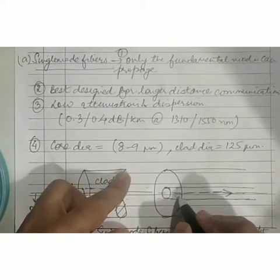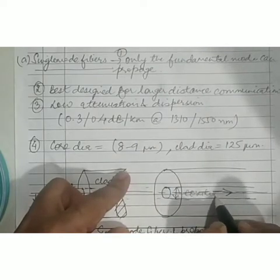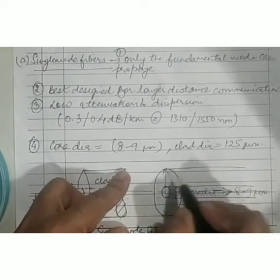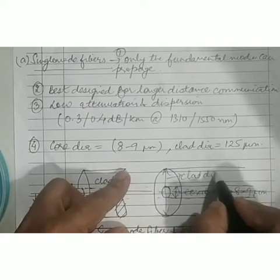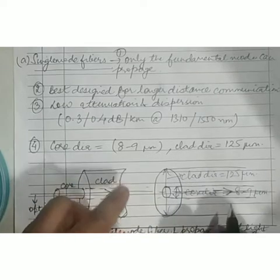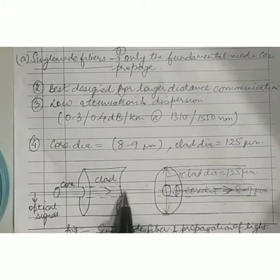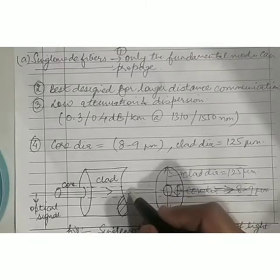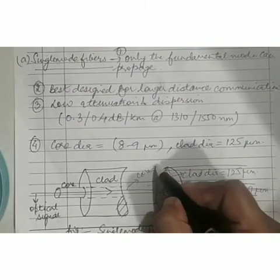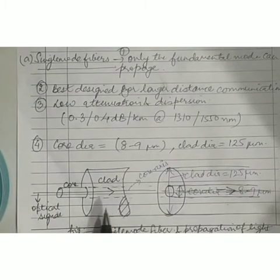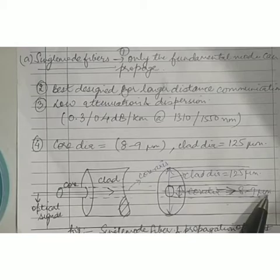The core diameter is around 8 to 9 micrometers, whereas the cladding diameter can be up to 125 micrometers. The core diameter is less because there is only one single mode to travel inside the fiber core, and that single mode will travel along the optical fiber core axis — meaning the signal will coincide with the core axis. This diagram shows the single mode optical fiber and indicates the propagation of the light signal inside it.